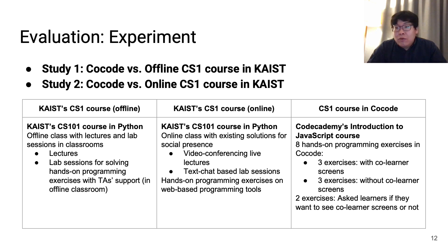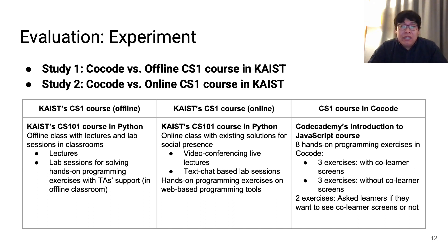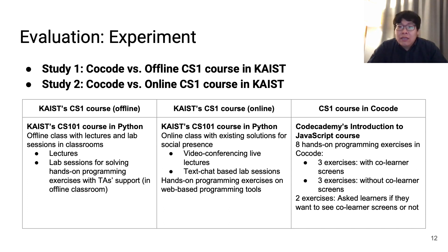During the pandemic, KAIST converted the course into a fully online course, replacing offline lectures with video conferencing and lab sessions with a text chat-based social learning platform. In this study, we compared each condition against a CoreCode-based CS1 course with programming exercises from Codecademy's Introduction to JavaScript. We had participants solve three exercises with co-learner screens, another three without co-learner screens, and then two final exercises with or without co-learner screens as they preferred, followed by a survey.